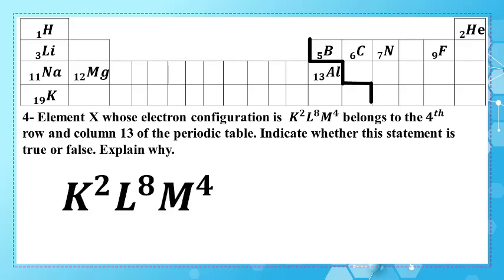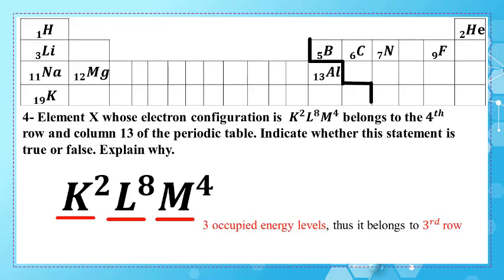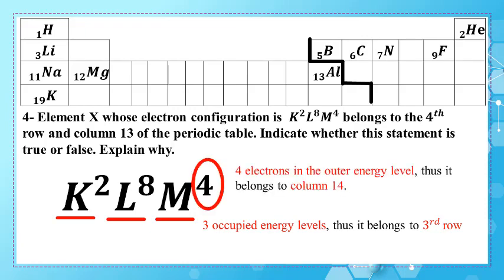In the electron configuration K2, L8, M4, we have three occupied energy levels, so it belongs to the third row. Also, we have four electrons in the outer energy level, so it belongs to column 14. Thus this element is found in column 14, row 3 of the periodic table.